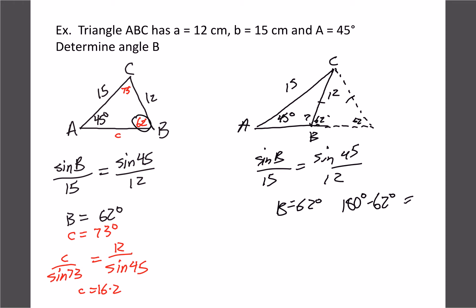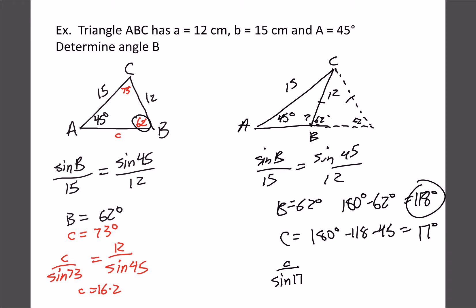The angle we're actually looking for is 180 minus 62 — the supplementary angle calculation, which your calculator won't do. So angle B is 118 degrees. Therefore angle C is 180 minus 118 minus 45, which gives us 17 degrees — a much smaller angle. To find side c we'd have c over sine 17 instead of sine 73, giving the correct calculation. Working that out gives us about 4.96, which rounds to 5. The distance is a lot shorter and the angles are quite different.